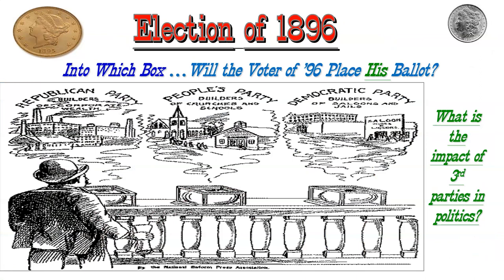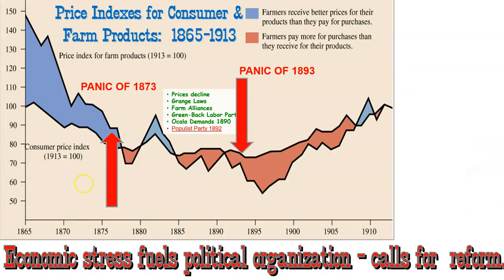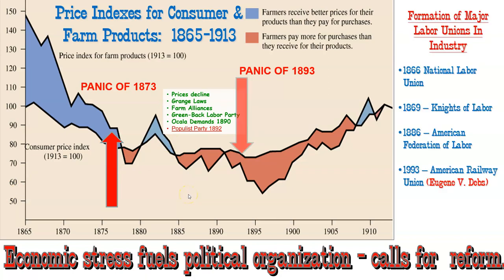The election of 1896 really brings about three choices for people, and that People's Party is the third one. The impact of third parties in American politics isn't huge in most of our history, but this populist movement is probably one of the most important, pressuring the two main parties to make some changes. There's economic stress throughout the last half of the 19th century that is creating a lot of these political stirrings.